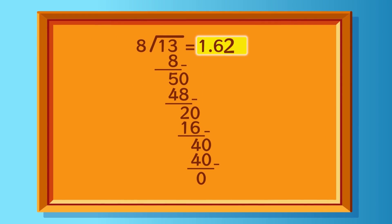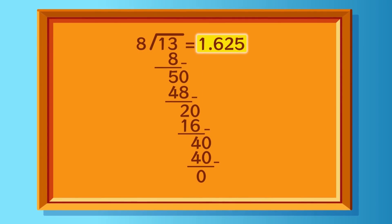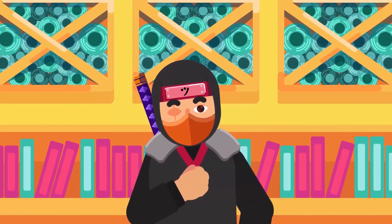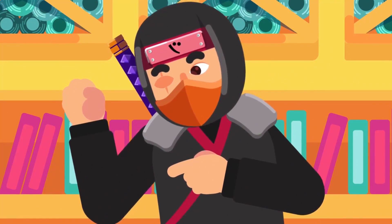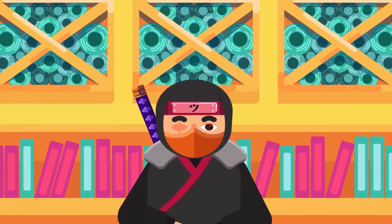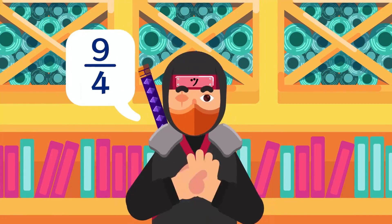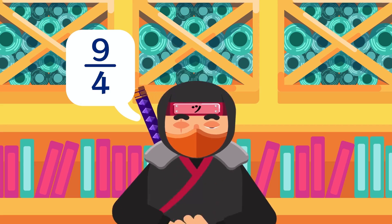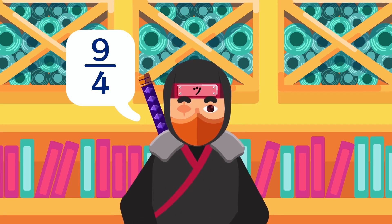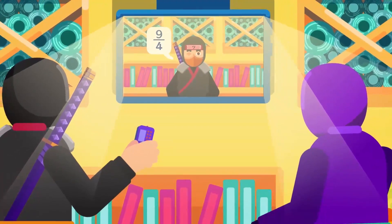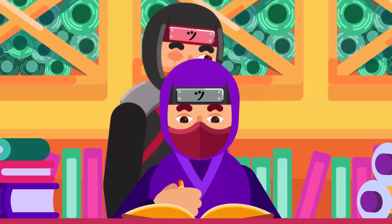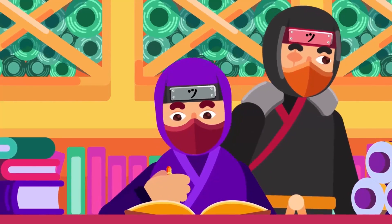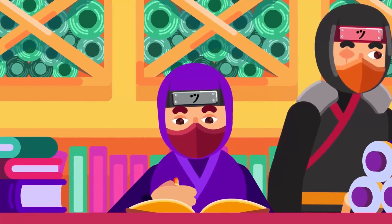So the fraction has now been converted into a decimal number: 1.625. Now let's throw a problem at you to test your decimal muscle. Follow the process and convert 9 over 4 into a decimal number by the long division method. Pause the video and solve the problem, then resume the video once you have solved it to check the answer on the screen.